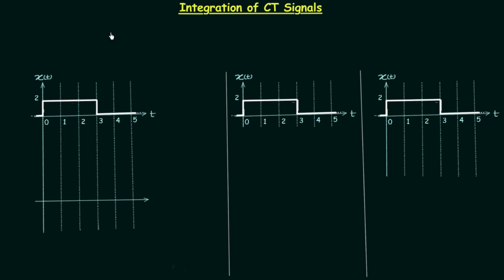Till now we have performed four different operations on continuous time signals. The first operation was shifting, which included time shifting and amplitude shifting. The second was scaling, including time and amplitude scaling. The third was reversal, a special case of scaling. The fourth was differentiation, discussed in the last two lectures. Now the fifth operation is integration. In this lecture we will understand how we can integrate continuous time signals.